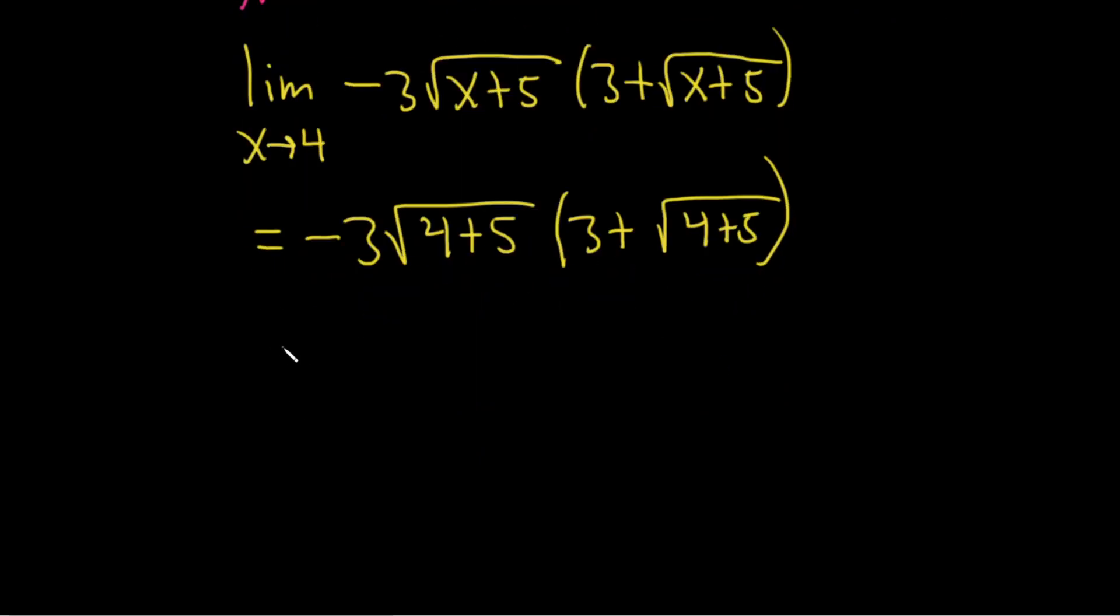So this is equal to negative 3. 4 plus 5 is 9, so we get the square root of 9. And same thing here, 3 plus the square root of 9. Square root of 9 is 3, so this is negative 3 times 3, 3 plus 3. That's a lot of 3s. Negative 3 times 3 is negative 9. 3 plus 3 is 6. We end up with negative 54.